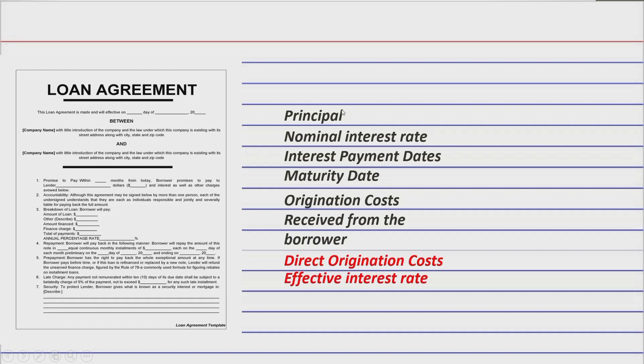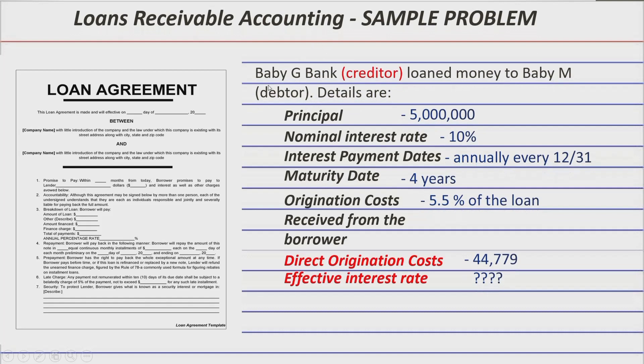These things are normally found in the loan agreement. Whereas these two, this direct origination cost and the effective rate are not. But even so, you still need these two. So in today's video, let's make a sample problem by means of putting other details.